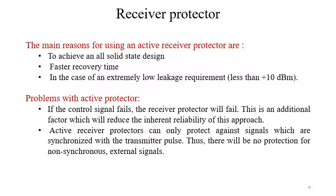The main reasons for using an active receiver protector are to achieve an all solid-state design and faster recovery time, especially when an extremely low leakage requirement — maybe less than 10 dBm — is needed. Problems with the active protector include: if the control signal fails, the receiver protector will fail, reducing inherent reliability. Also, active receiver protectors can only protect against signals synchronized with the transmitter pulse, so there is no protection for non-synchronous external signals.